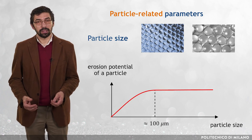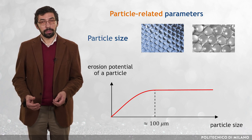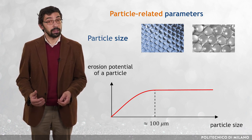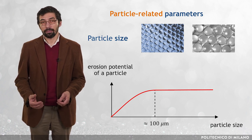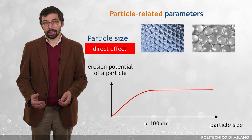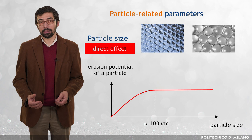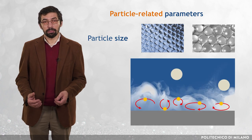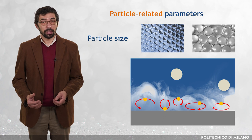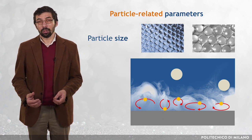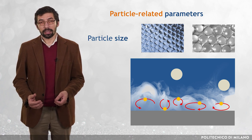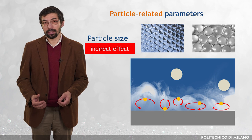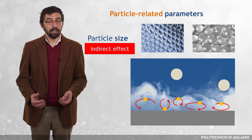Experimental results showed that the erosion potential of a given particle increases with particle size up to a threshold value of about 100 microns, and remains substantially unchanged or undergoes a very mild increase for bigger particles. This quantifies the direct effect of particle size, as it involves only the relation between the impinging particle and the target surface. At the same time, it has been observed that the damage produced by fine particles can be more severe than that of coarse particles, because the particles are more prone to be trapped inside the near-wall turbulent eddies, and therefore the same particle impinges against the target wall several times. This is an example of the indirect effect of particle size, because it arises from the interaction between the particle and the turbulent flow.